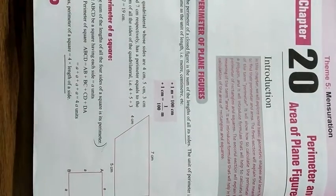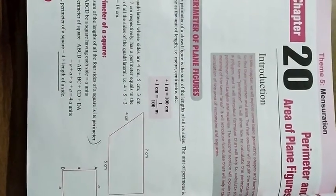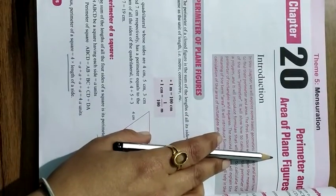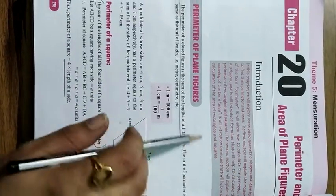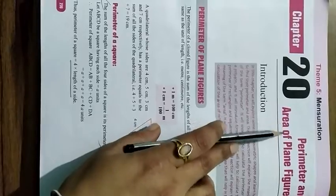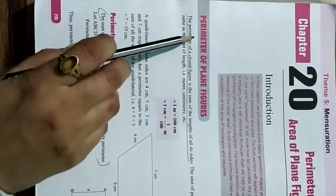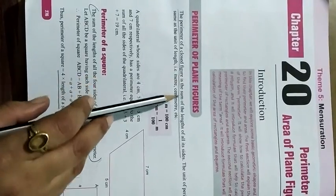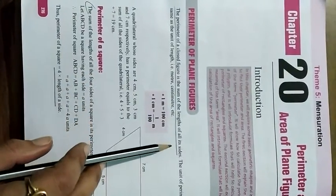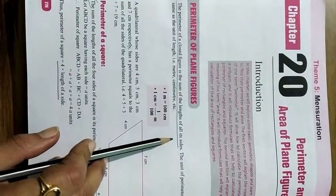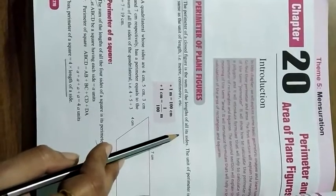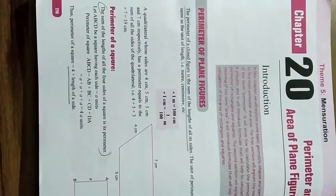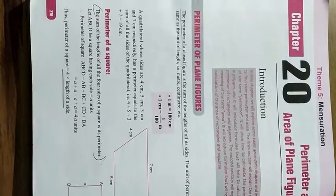Hello children, today in this video we are going to do Chapter 20: Perimeter and Area of a Plane Figure. First of all, what is perimeter? The perimeter of a closed figure is the sum of the lengths of all the sides. In a polygon with n sides, the sum of all n sides is equal to its perimeter.